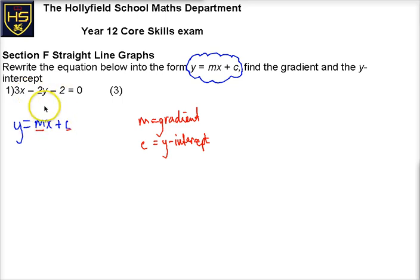There are advantages to this form, but in terms of this video we've just been asked to convert to this form. So if we've got 3x minus 2y minus 2 is 0...